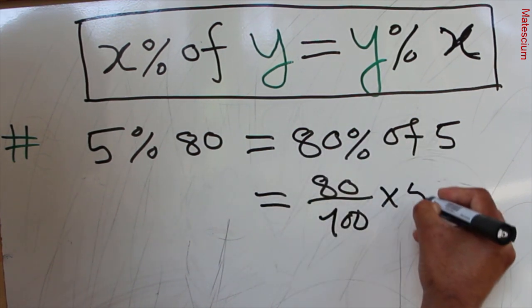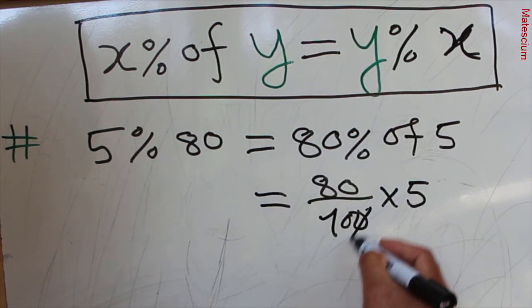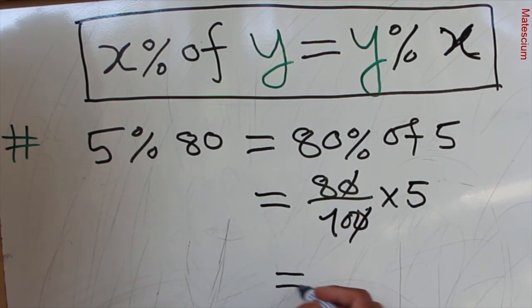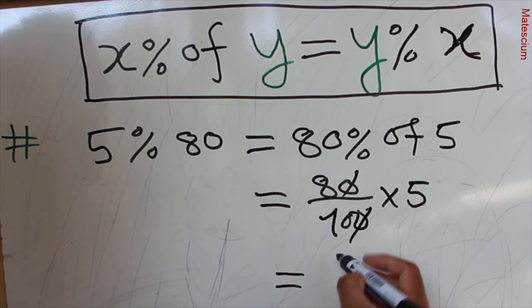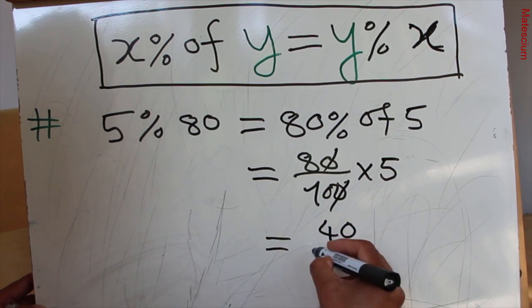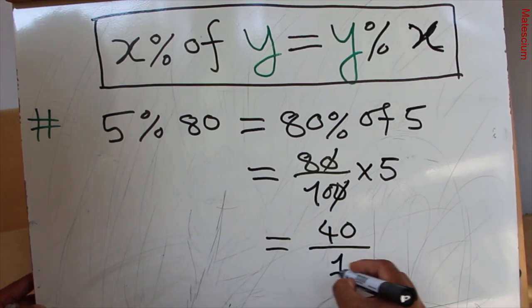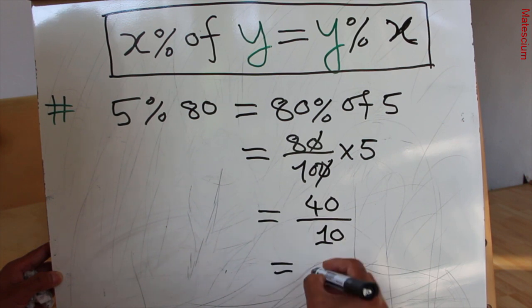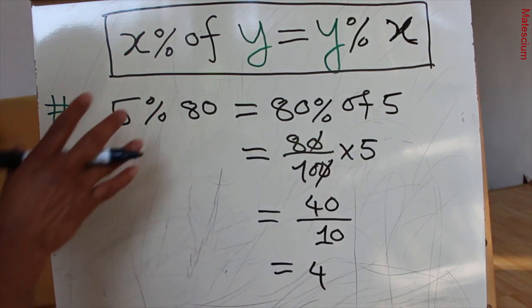We have 80 over 100 times 5. The zeros cancel each other, leaving 8 times 5 which is 40. Then 40 over 10 equals 4. So the right-hand side is 4.